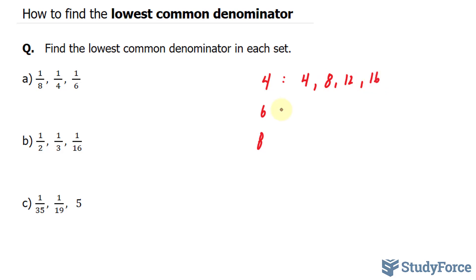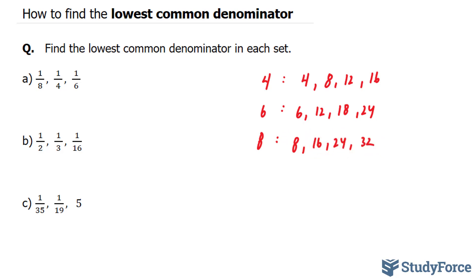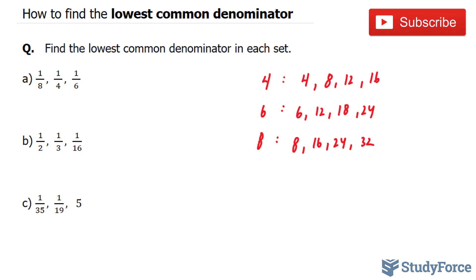Multiples of 6 are 6, 12, 18, and 24. Multiples of 8 are 8, 16, 24, and 32. And what you're checking for are commonalities — what numbers are in common in each of these sets? We have a 12 here and 12 here, but no 12 for the 8. So so far, nothing's in common. Let's continue.